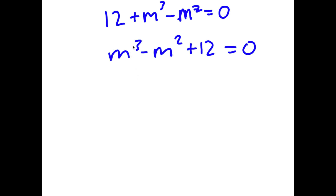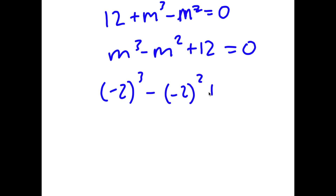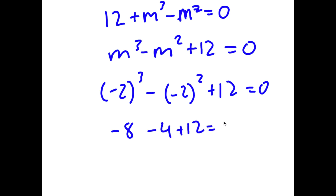If we plug in 2, we have 2 to the power of 3, which is 8. 8 minus 4 is 4, and 4 plus 12 is 16. 16 does not equal 0. But for negative 2: negative 2 to the power of 3 minus negative 2 squared plus 12 equals 0. Negative 2 to the power of 3 is negative 8, and negative 2 squared is 4. So I have negative 8 minus 4 is negative 12, and negative 12 plus 12 equals 0, meaning negative 2 is a solution.